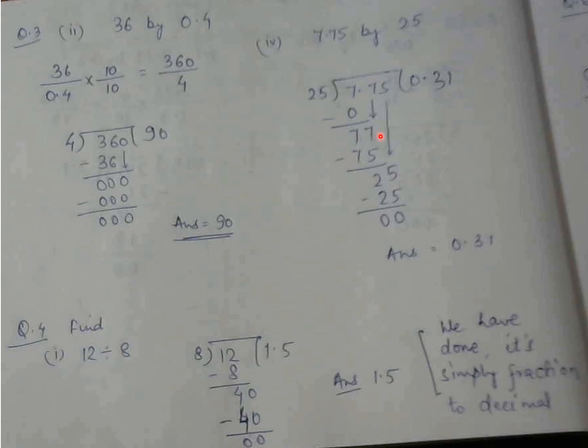25 threes are 75. Then 7 minus 5 is 2. Copying the next digit, 25 and 25 ones are 25. In order to check you can do 0.31 into 25, you will get the answer as 7.75.